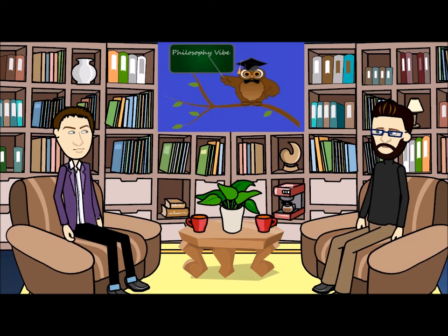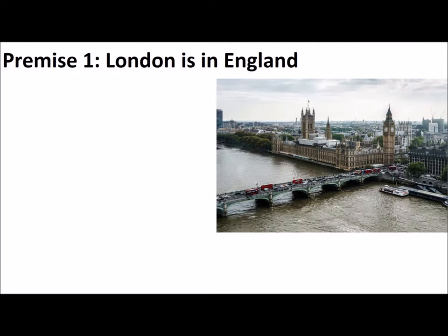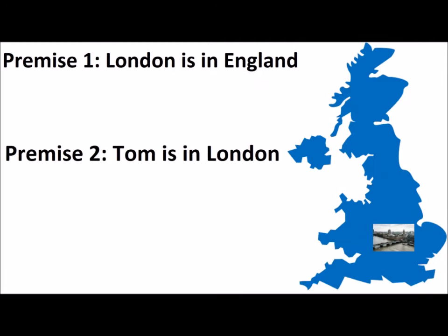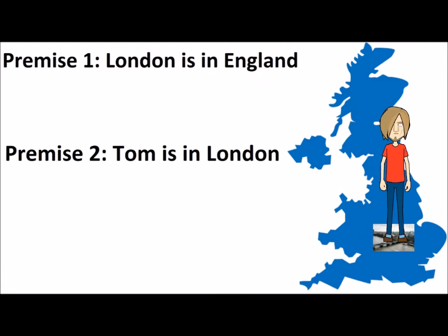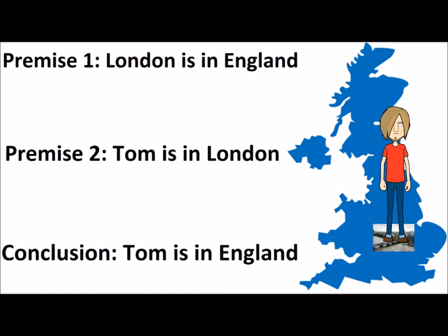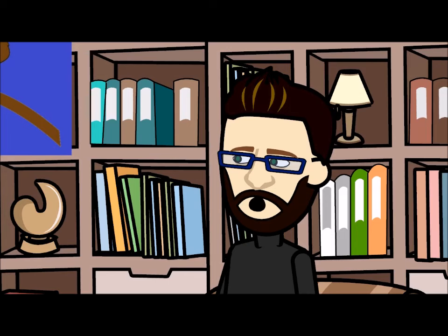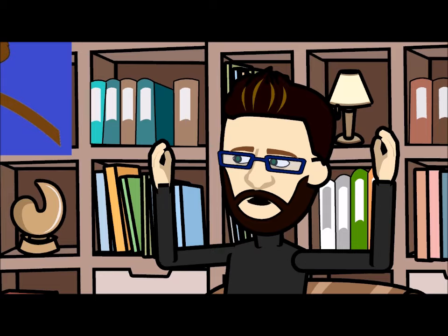Here's an example of a sound argument. Premise one: London is in England. Premise two: Tom is in London. So conclusion: Tom is in England. Both the premises are true and the argument logically follows, making it valid. Therefore, the argument as a whole is sound.